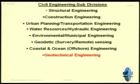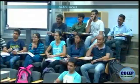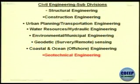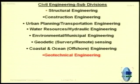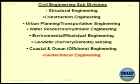Just for information — how many sub-branches does civil engineering have? There are more than 125 sub-branches of civil engineering. There are few subjects which are very broad: structural engineering, construction engineering, urban planning, transportation engineering, water resources, hydraulic engineering, environmental and municipal engineering, geodetic engineering — that is survey and remote sensing — coastal engineering, ocean and offshore engineering, and geotechnical engineering.